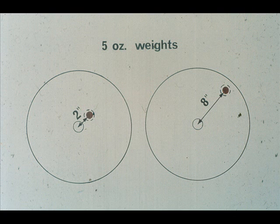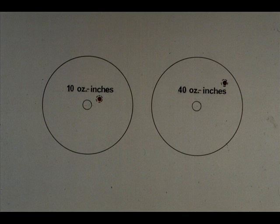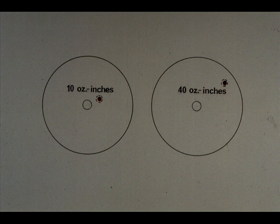Study this illustration carefully. As you can see, there are two heavy spots, each weighing five ounces. The only difference is their distance from the center of the flywheels. The five-ounce weight two inches from the center causes an unbalance of ten ounce-inches. The other five-ounce weight causes an unbalance of forty ounce-inches, since it is eight inches from the center. In short, the farther the heavy spot is from the center, the greater the unbalance it creates.